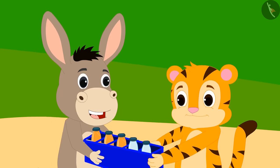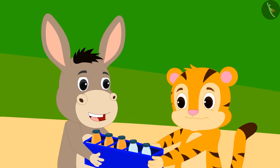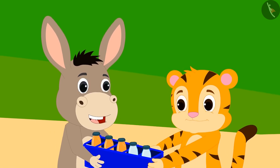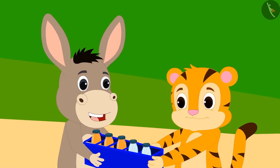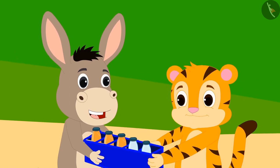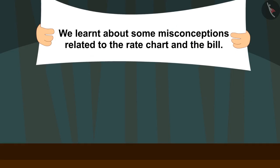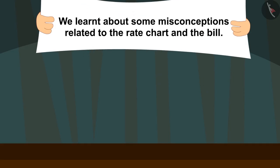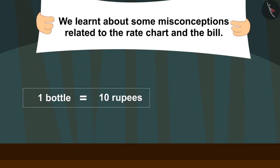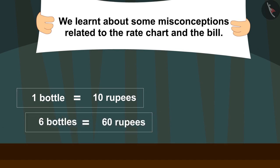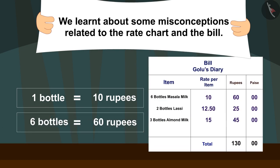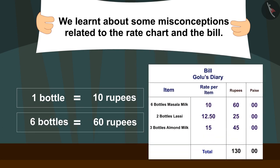Shere Khan and Bholla then went to meet their friends with the bottles they bought. In this video we saw some misconceptions related to the rate chart and the bill.